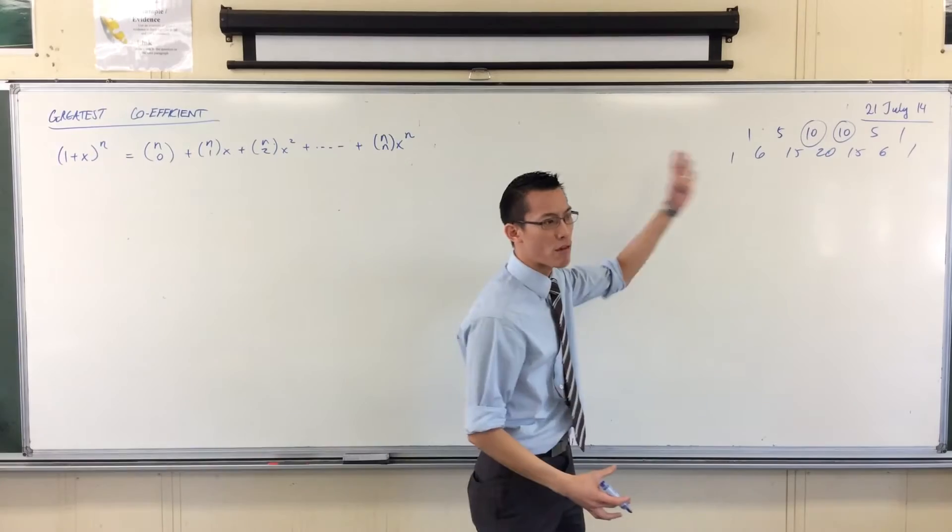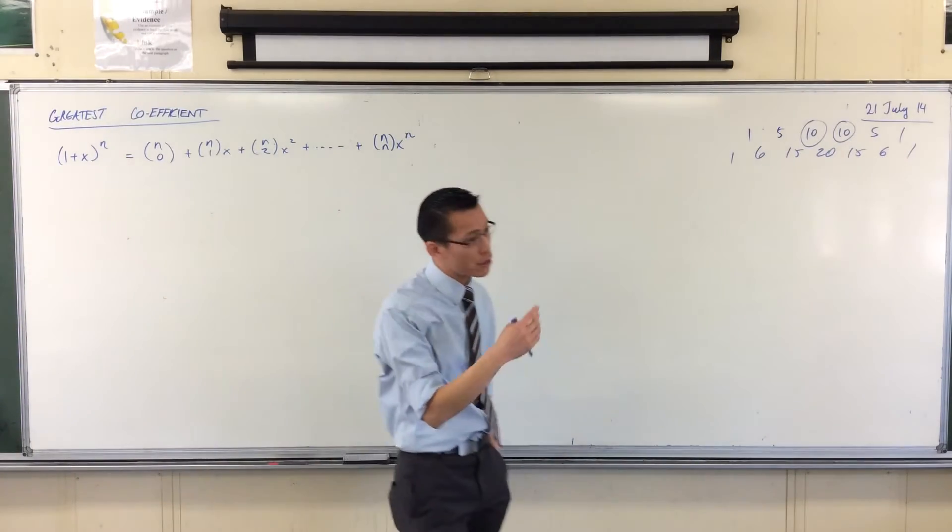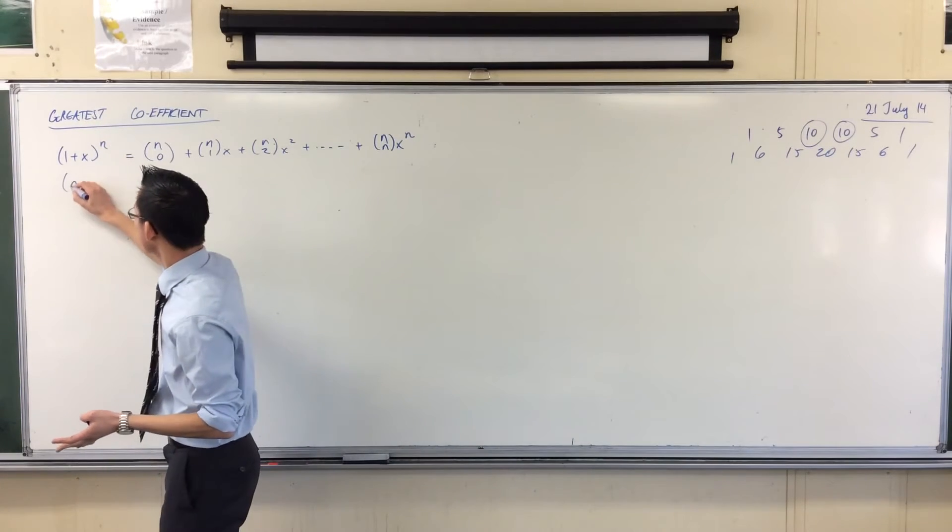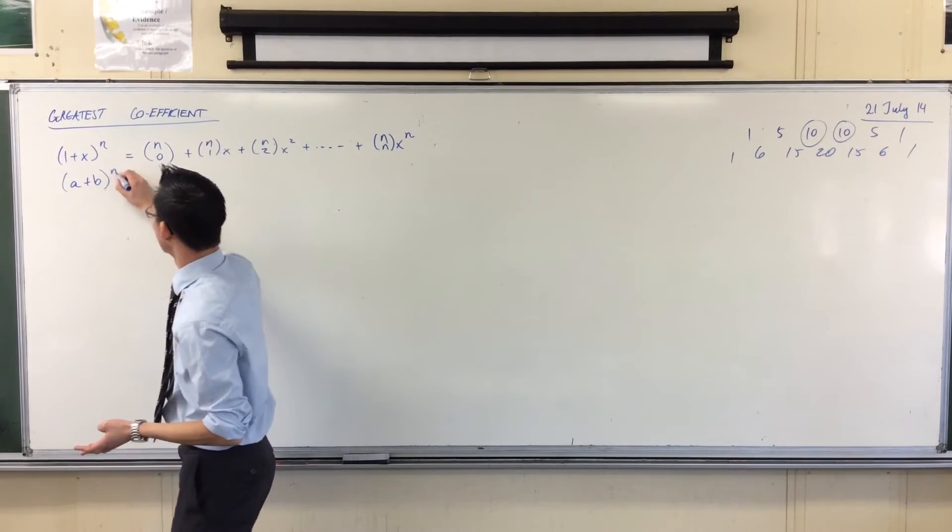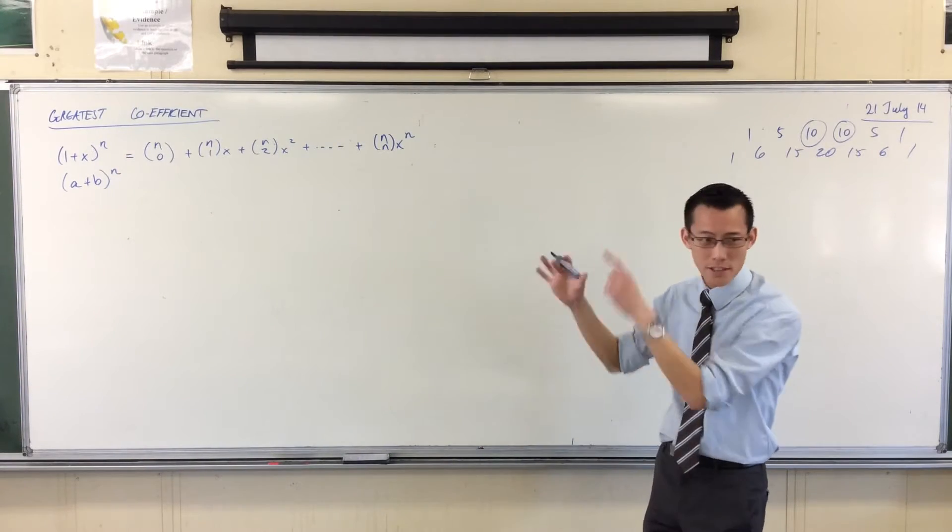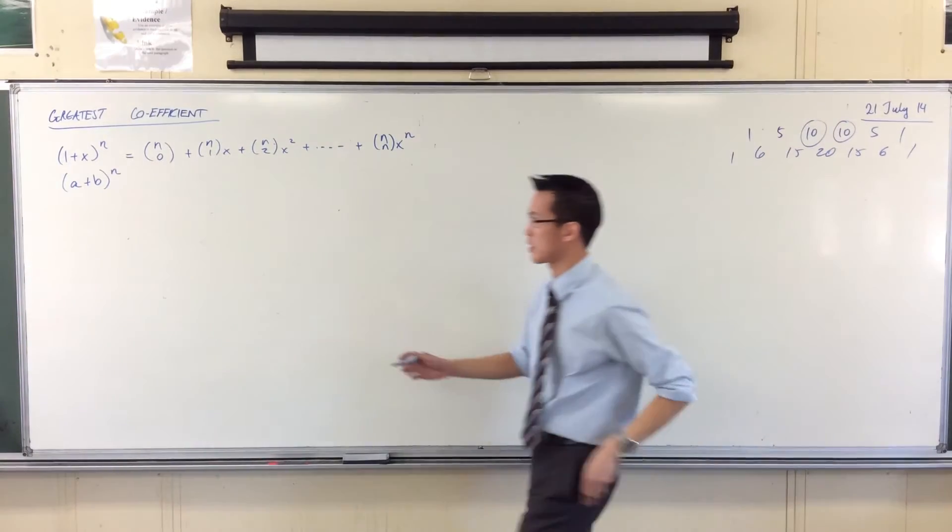Now, here's the thing though, this breaks down in any other case apart from this. If you don't just have 1 and x, if you've got something else, because of the different shape of this expansion, the greatest coefficient is not always nearly in the middle.